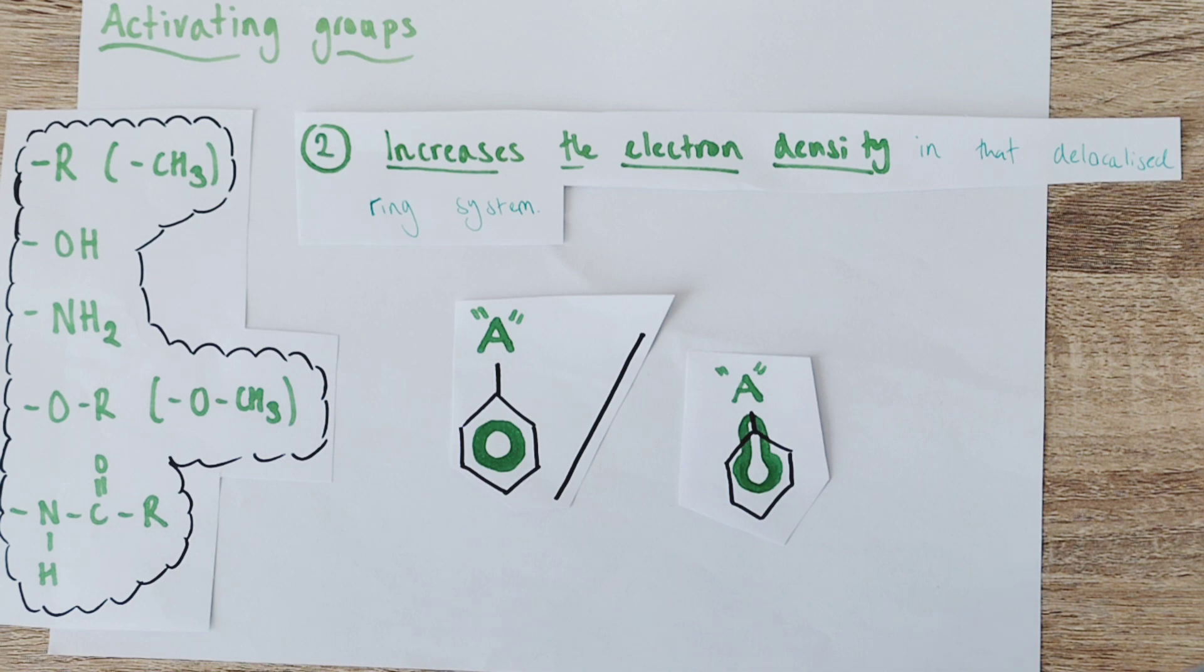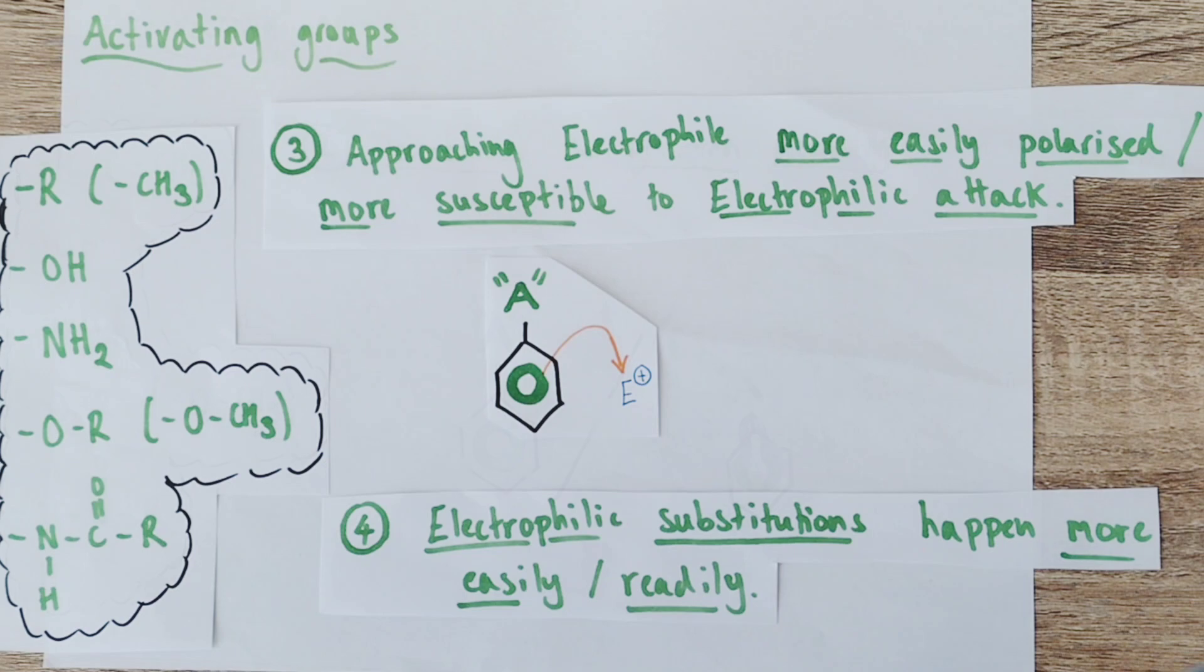That will have implications in how easily it will react with electrophiles. When a possible electrophile approaches our activated benzene ring, which is acting like a better nucleophile, with more electron density in the ring itself, one of two things can happen.